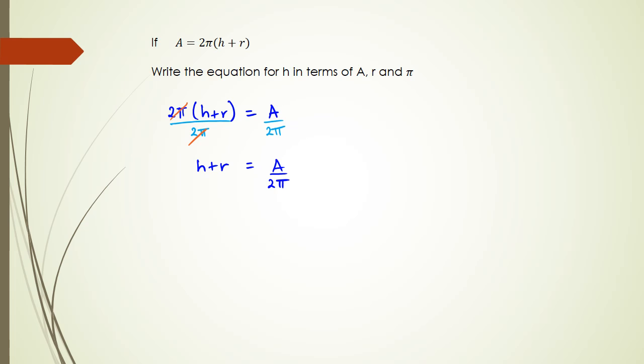Then the next step is getting rid of the r, so I've got minus r here and minus r on this side. On the right-hand side I have h that's left over on the left-hand side, and the right-hand side I have A over 2π minus r.